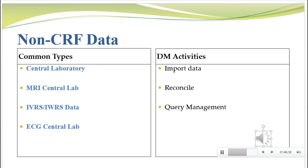Another very common central lab type is an MRI lab, also ECG labs or monitoring labs — any place where a sample can be read and a data set created, which is then sent back to us. You can also think of IVRS and IWRS data coming in that way — voice recognition or web-based data. This could be randomization data, patient diary data, or questionnaires. It's really anything coming in through a voice or web system, and again you don't put that data into your clinical database — you create a data set and compare the two.